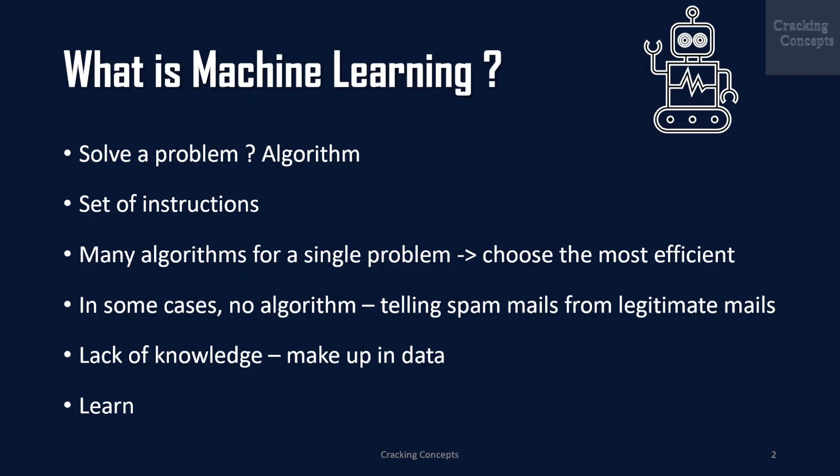For some tasks, however, we do not have an algorithm. One such example is telling spam emails from legitimate ones. We know that the input is an email document, that in the simplest case is a file of characters. We also know that the output should be a yes or a no, indicating whether the message is spam or not. But we do not know how to transform the input to the output. What is considered spam changes in time and from individual to individual. We lack knowledge here.